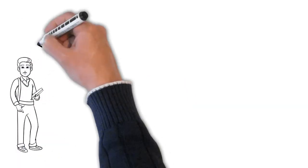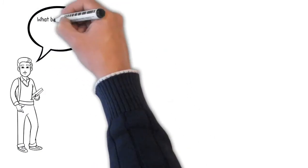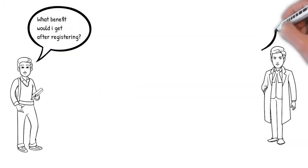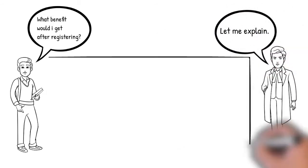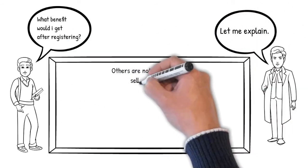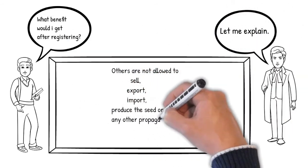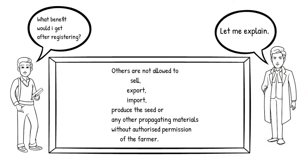Now let us look at what rights a farmer gets after registration. Others are excluded from selling, exporting, importing, or producing the seed or any other propagating materials without authorized permission of the farmer, because this becomes the intellectual property of the farmer who has developed the plant variety. Hence, this prevents others from having an economic benefit for a fixed amount of time, which depends on the type of the plant.